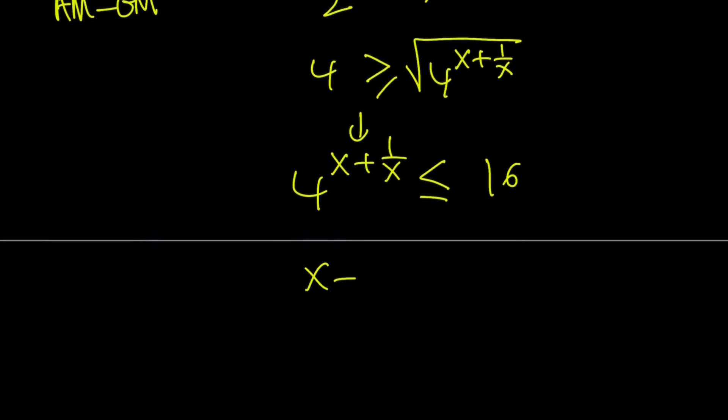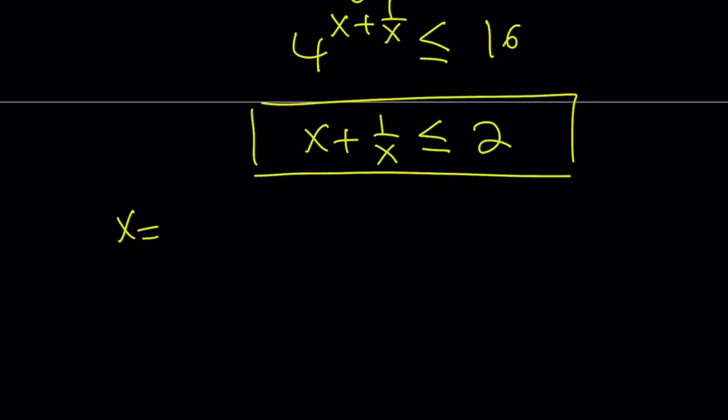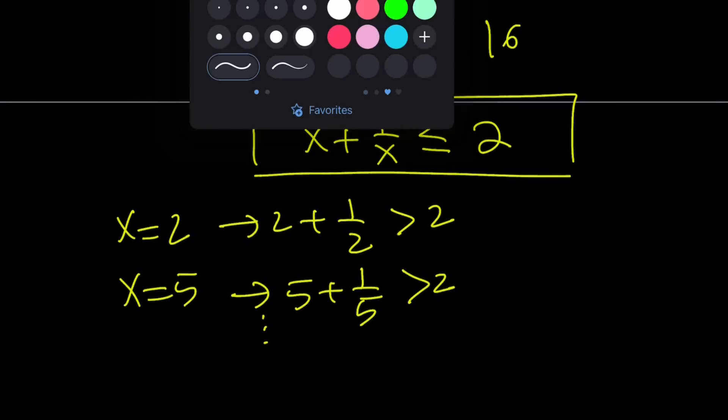And this just indicates that x plus 1 over x is greater than or equal to 2. Because if x plus 1 over x is greater than 2, then 4 to the power of that number is going to be greater than 16. So we got this interesting inequality. And if you replace x with certain values, for example, let's say we test x equals 2. This gives us 2 plus 1 half, and that's definitely greater than 2. If you replace x with 5, you get 5 plus 1 fifth, that's definitely greater than 2. So on and so forth. What happens if you replace x with negative values? But we already said we want x to be positive. So if x is positive, this inequality is not going to work except for one case. And we'll talk about that.